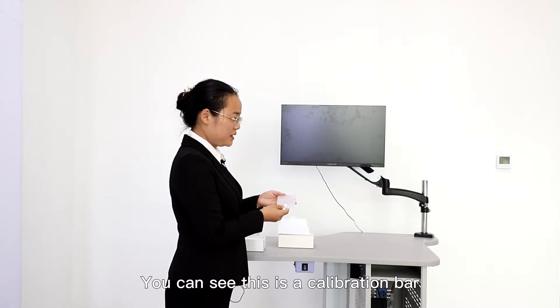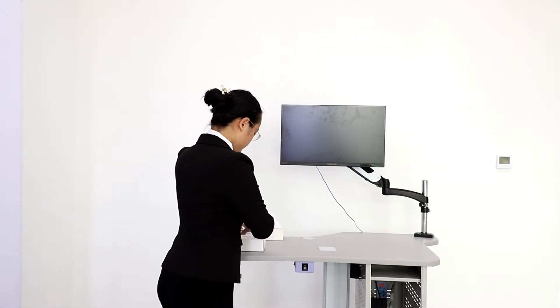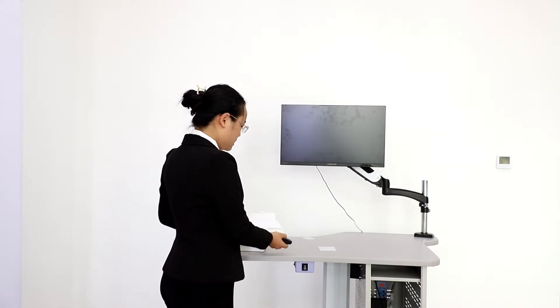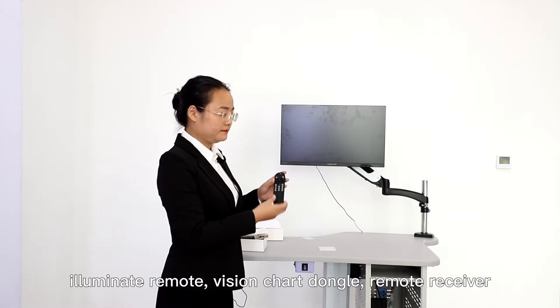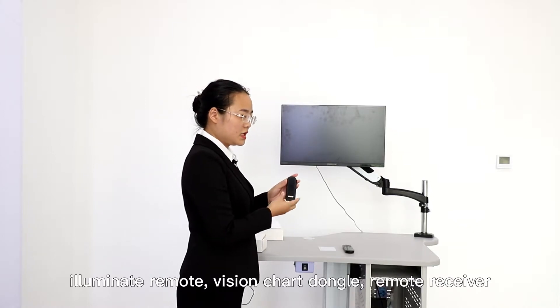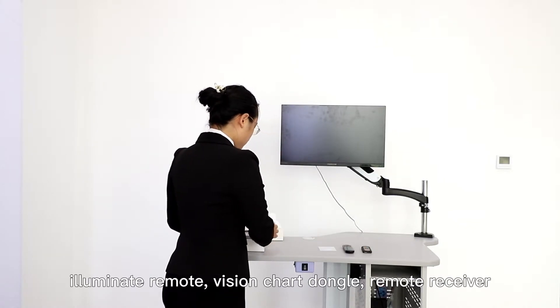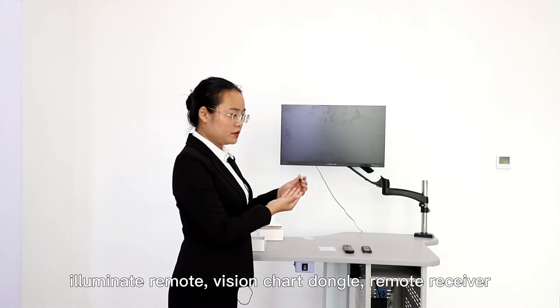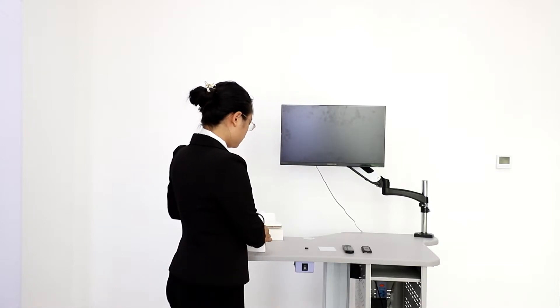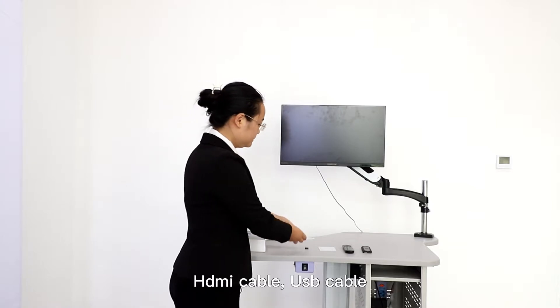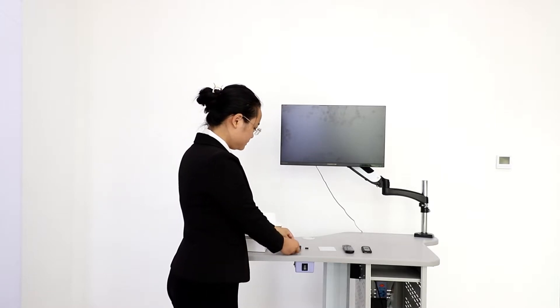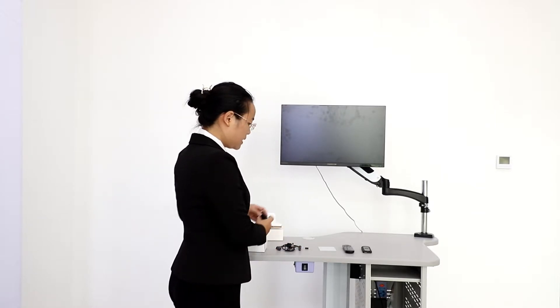You can see this is a calibration bar, illuminate remote, vision check dongle, remote receiver, HDMI cable, USB cable, and power adapter.